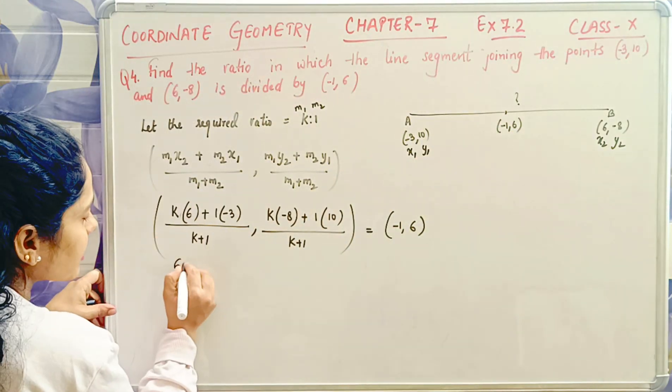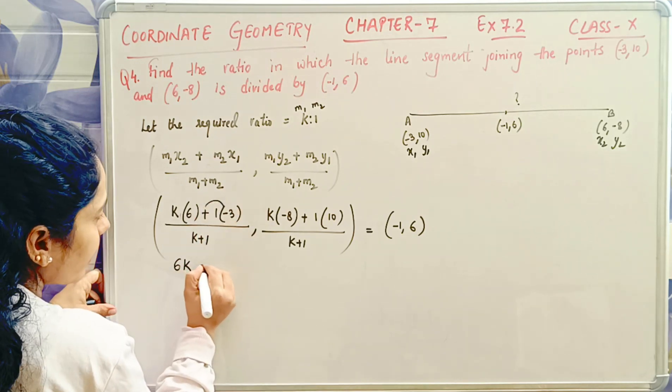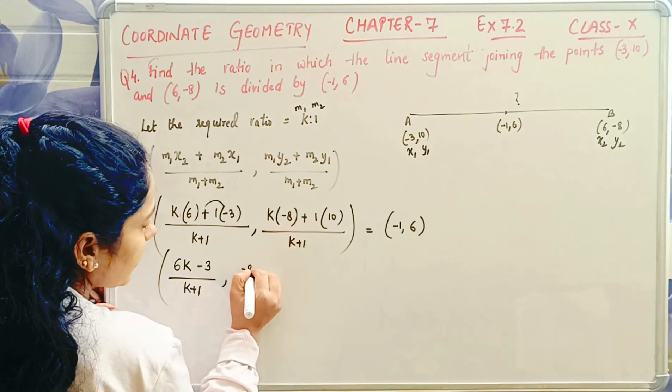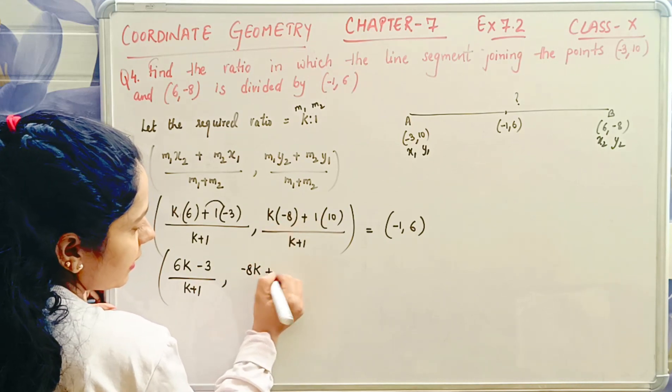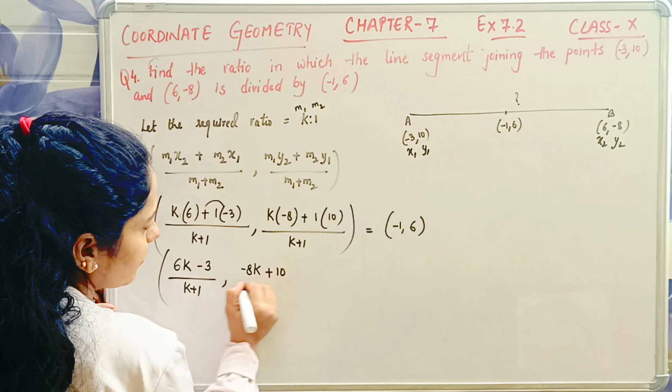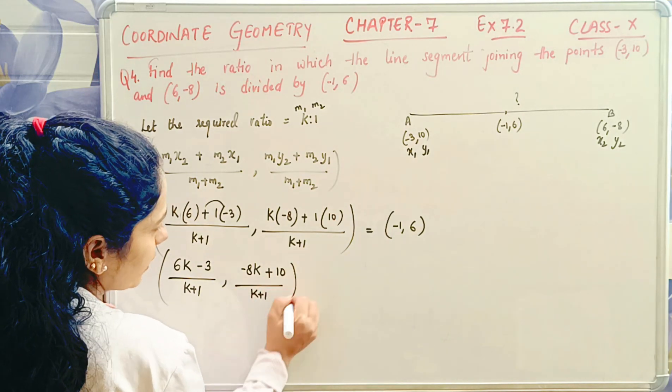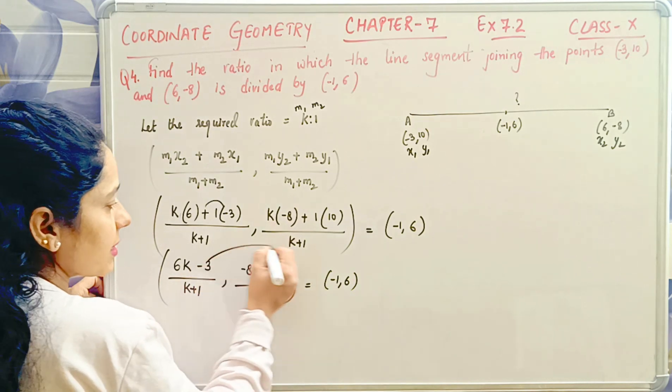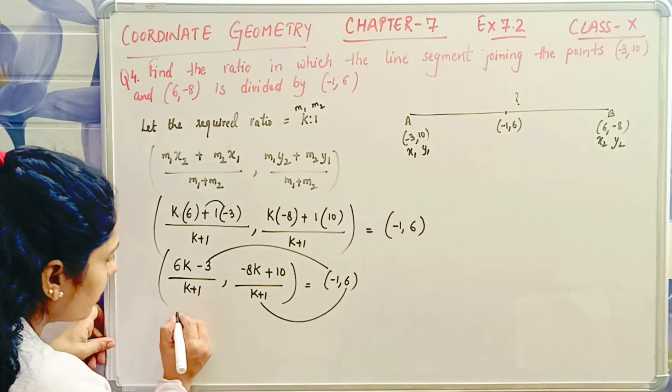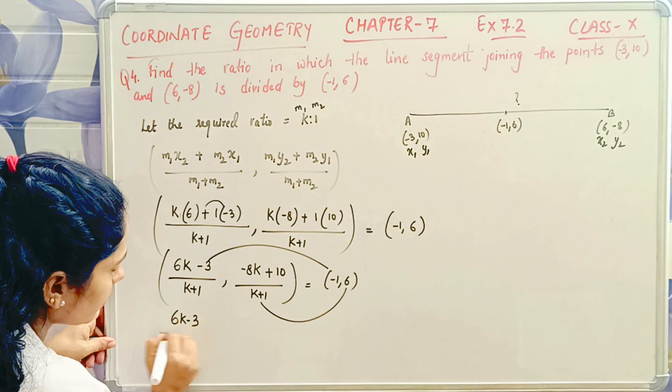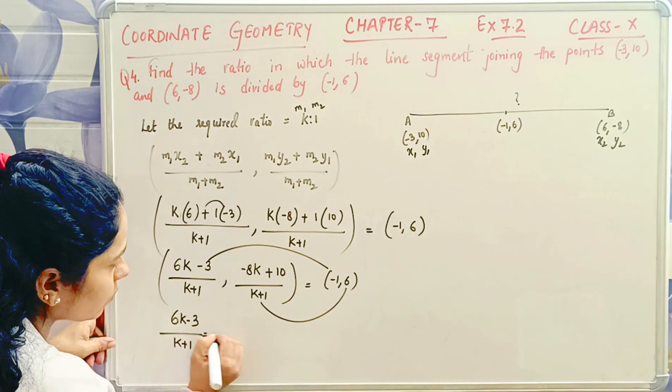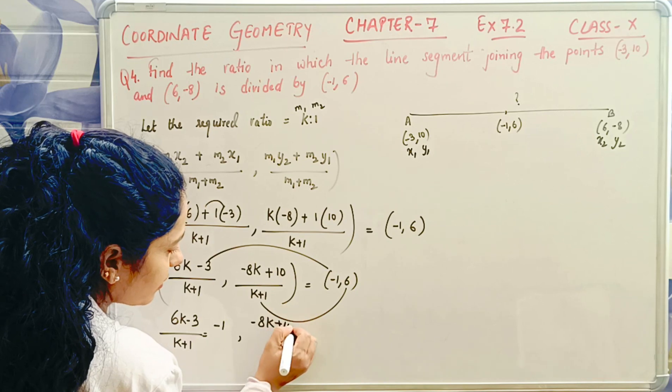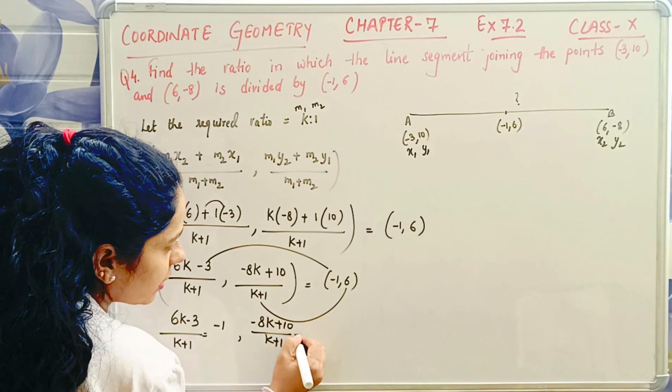Now k into 6 is 6k, plus (-3) is 6k - 3, divided by k plus 1. Comma. -8k plus 10, by k plus 1, equal to (-1, 6). Now x coordinates with x, y with y. So 6k - 3 by k + 1 equals -1. And -8k + 10 by k + 1 equals 6.